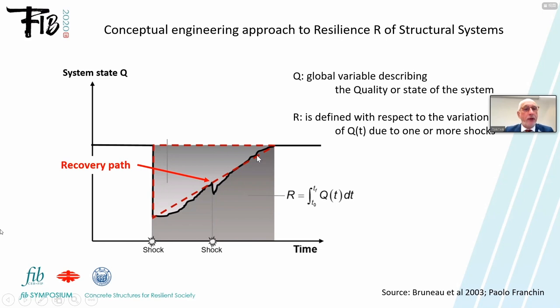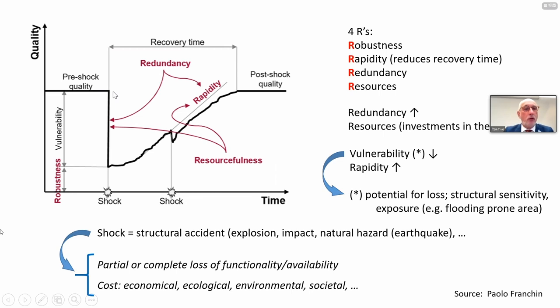Here are some more concepts indicated. The drop you see here is related to the vulnerability of the system, and the capacity or quality that remains is related to robustness. We can use four R's: robustness, rapidity — that's the speed at which the system recovers to pre-shock quality — redundancy, and resources. If redundancy and resources increase, meaning investments in the system, vulnerability goes down and the rapidity of recovery increases.